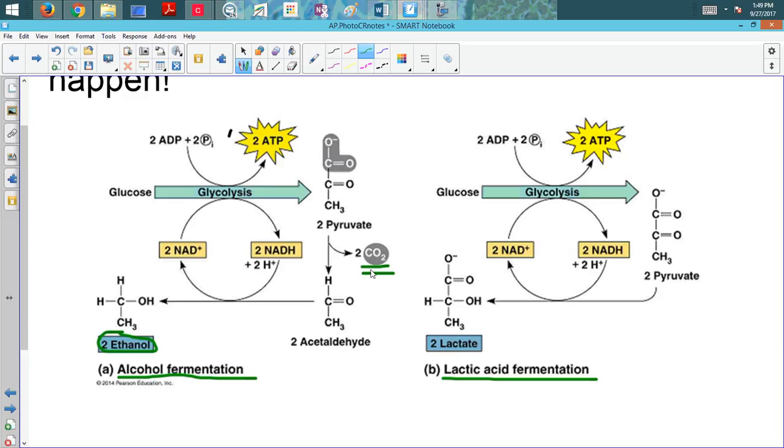That is also why, if you've ever baked bread before and you add yeast to it, the yeast are actually doing alcoholic fermentation. And that's why your dough is able to rise. They're producing CO2 bubbles. Now, when we make bread, bread is not alcoholic, so in the cooking process we cook off that alcohol. But the CO2 is responsible for the rising.